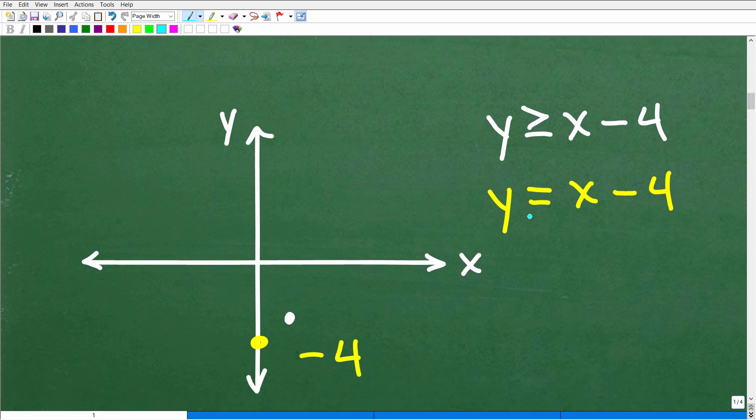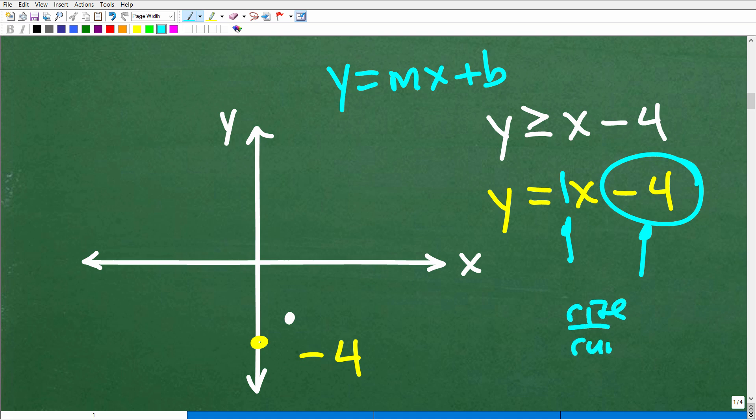So to graph this line, this linear equation, this has a slope of one. This is our y-intercept, negative four. Again, I'll draw your attention to y equals mx plus b. So this lovely linear equation here is in slope-intercept form. So I could just go to negative four. That's the y-intercept right here, and I know this has a slope of one. So it's rise and run is one over one positive. It's a positive one. So the line's going to be going upward like so.